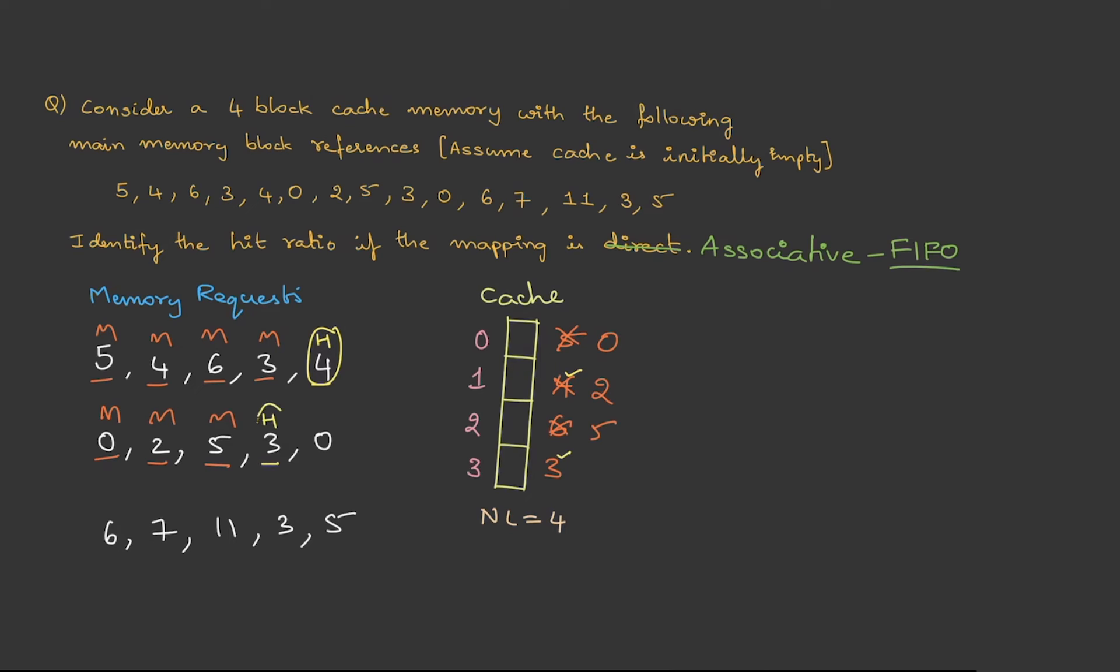Then 5 is a miss. But look at 3 - 3 is available, therefore this is a hit. Then 0. 0 is also available, therefore this is a hit.